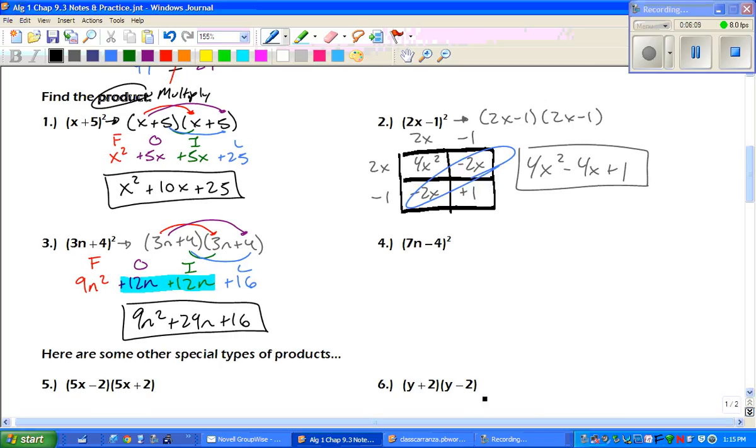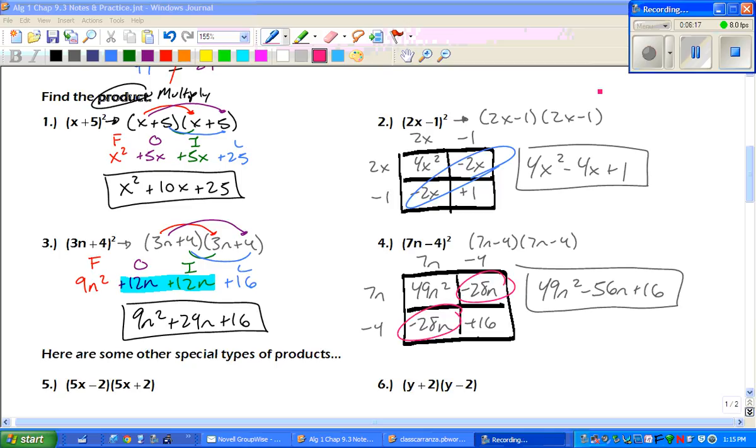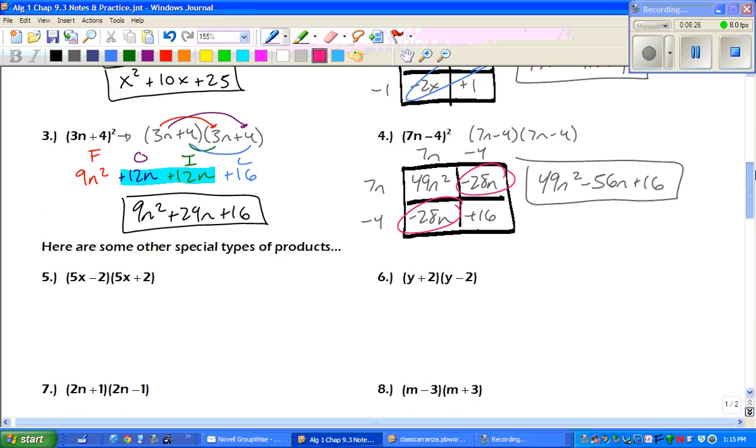Number 4. All on your own, you can do box method or FOIL. Go ahead and pause the video and good luck. Okay. And if you combine like terms, you should get 49n squared minus 56 plus 16.